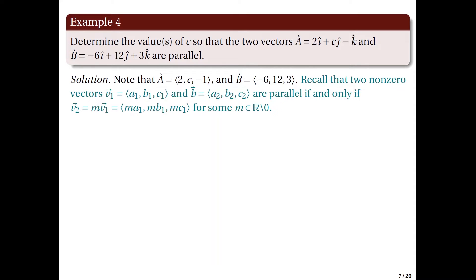Looking at the components of vector B, the values −6, 12, and 3 all share a common factor of −3. Hence, we can write (−6, 12, 3) = −3 · (2, −4, −1), which equals −3 times vector A when C = −4.